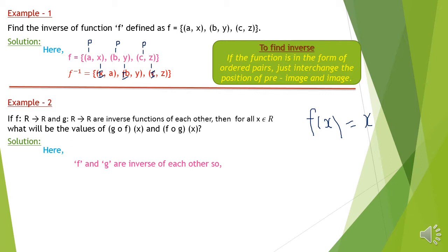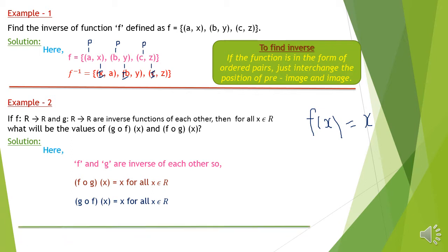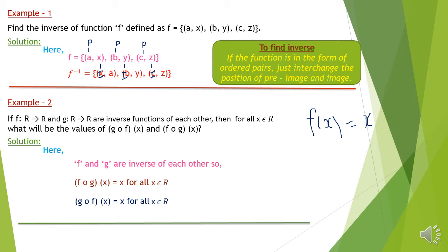The identity function is defined as f(x) = x for a single function. For a composite function, the same applies: input and output will be equal — image and pre-image will be equal, or the element of the domain and element of the range will be equal. Since our input is x, the value of the composite function GOF(x) will also be x. So FOG(x) = x and GOF(x) = x by definition. That's very simple — it goes by definition.